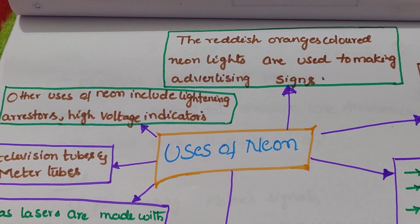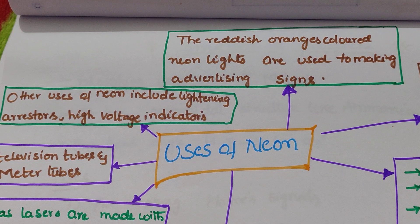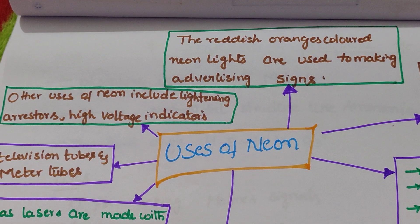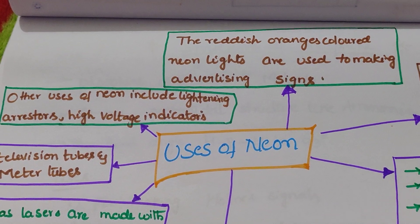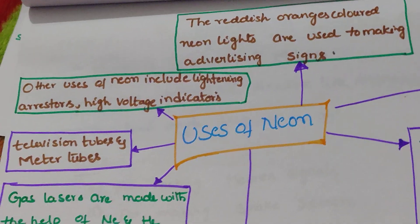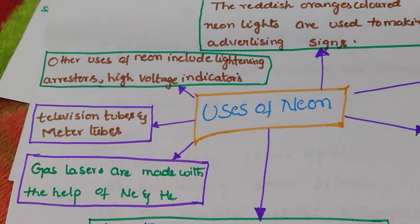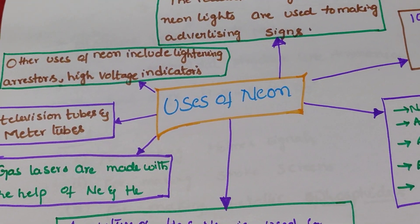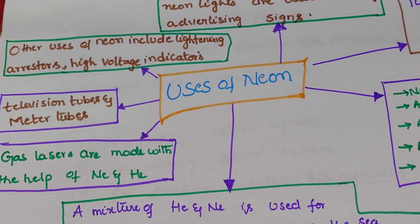Other uses of neon include lightning resistors and high voltage indicators. Neon gas is also used in television tubes and meter tubes.